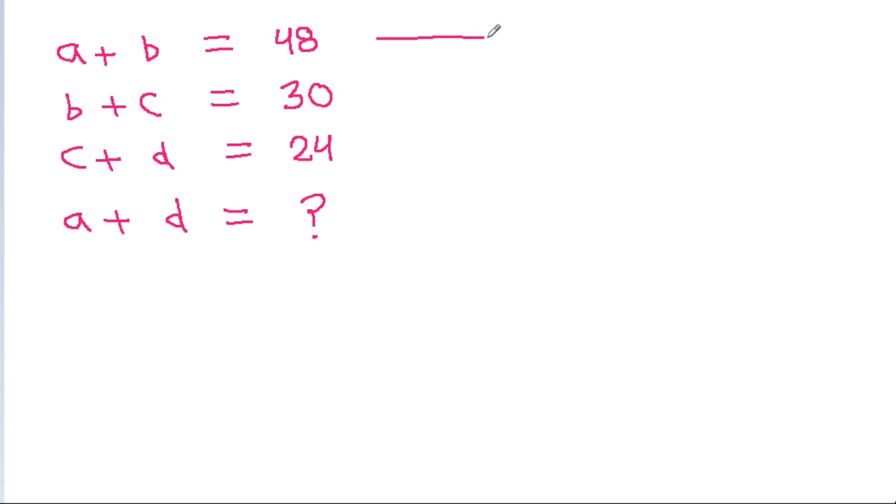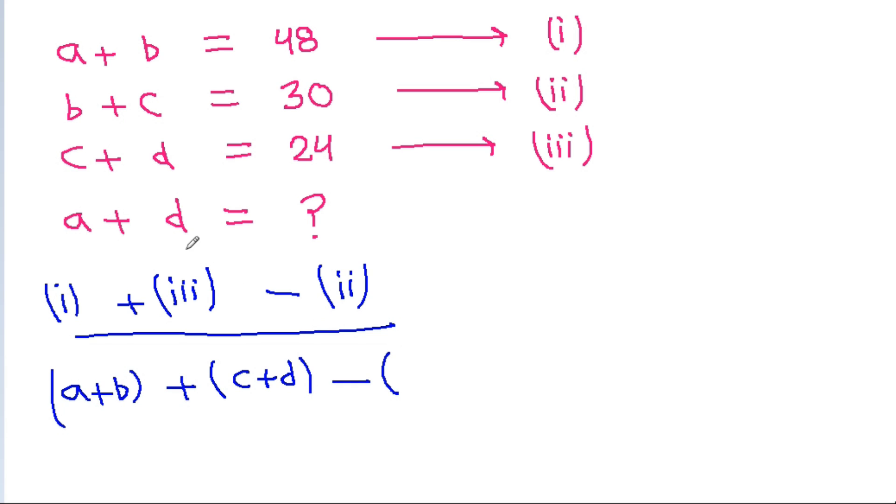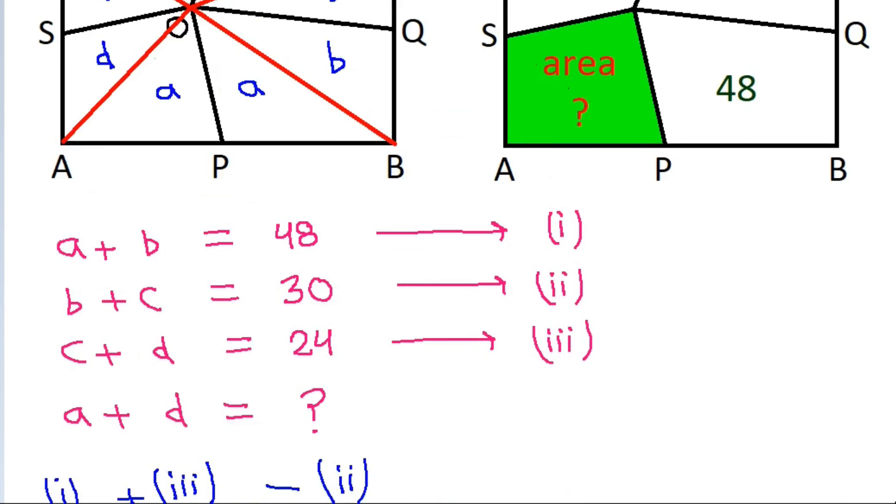If we assume this is equation 1 and this is equation 2 and this is equation 3, and now if we add equation 1 and equation 3 and then subtract equation 2, we get A plus D plus B plus C on the left hand side, minus B plus C on the left, and in the right hand side we get 48 plus 24 minus 30. Now B and minus B will get cancelled and C and minus C will get cancelled, and we get A plus D equals 48 plus 24 minus 30, which is 42.